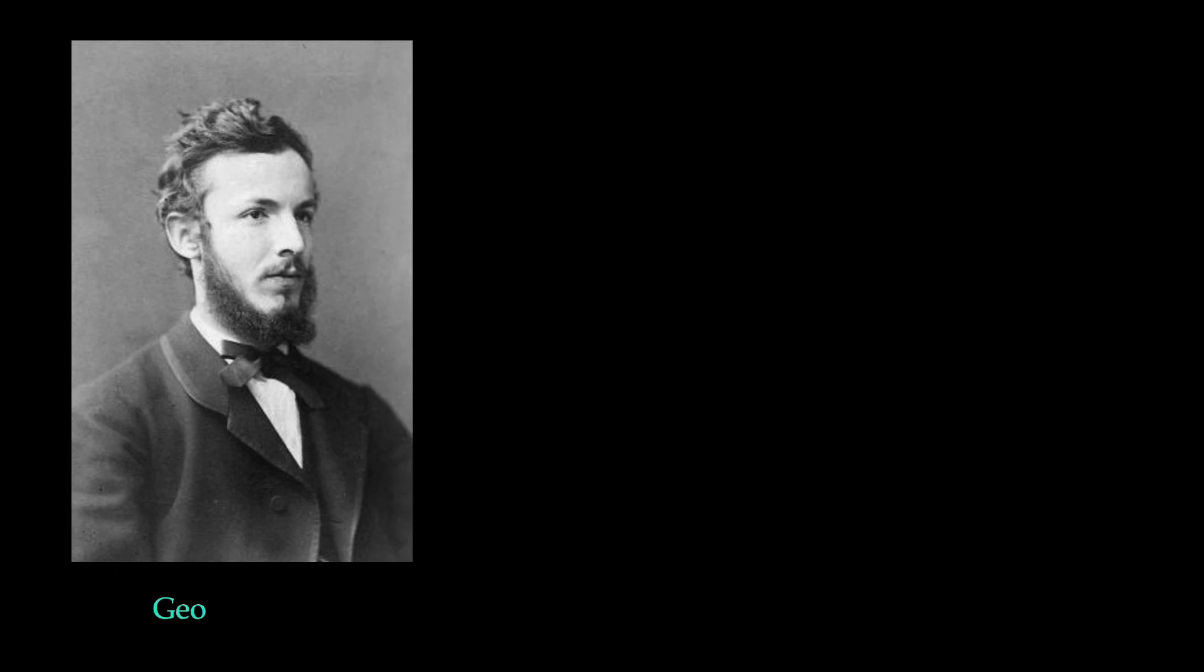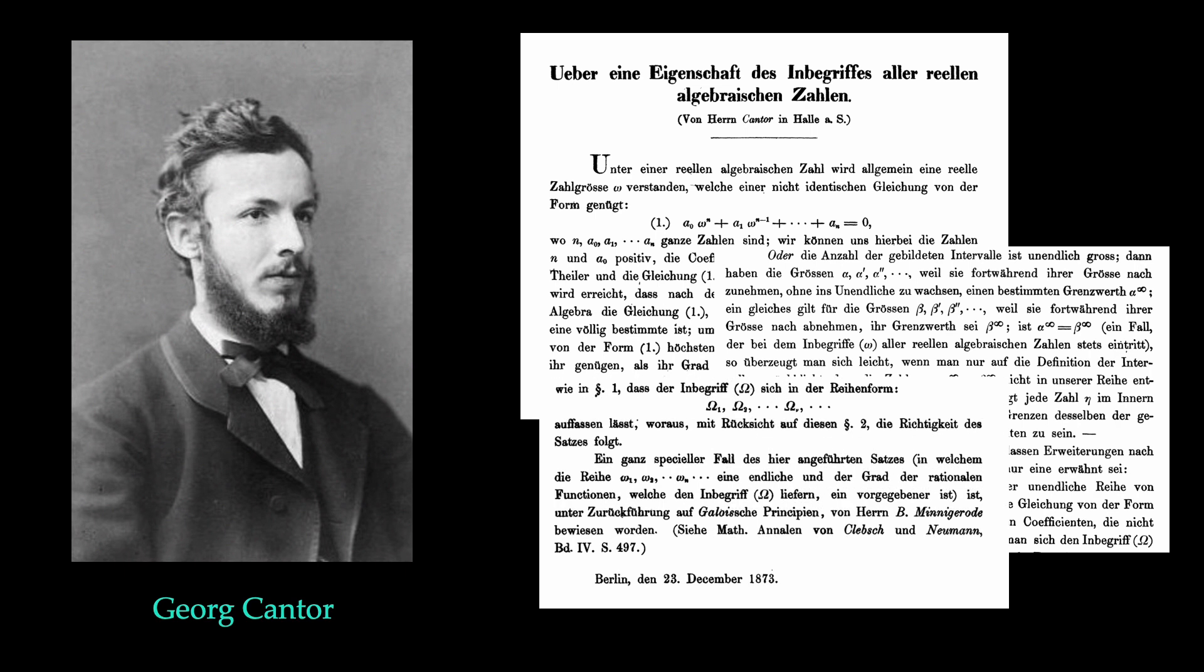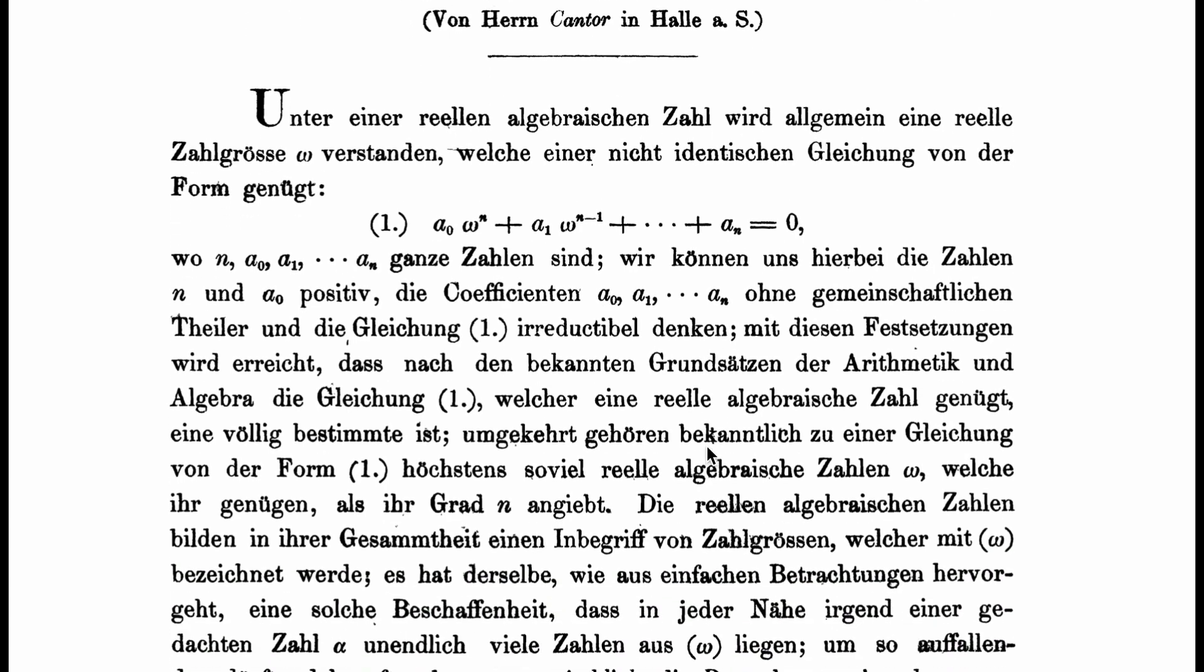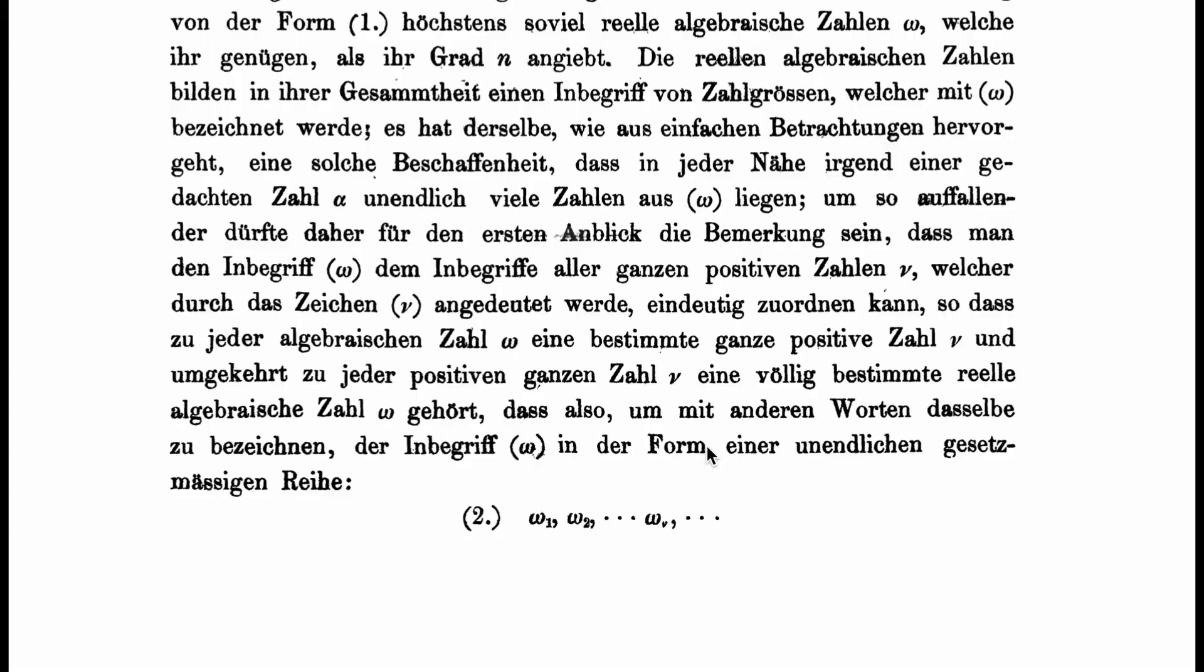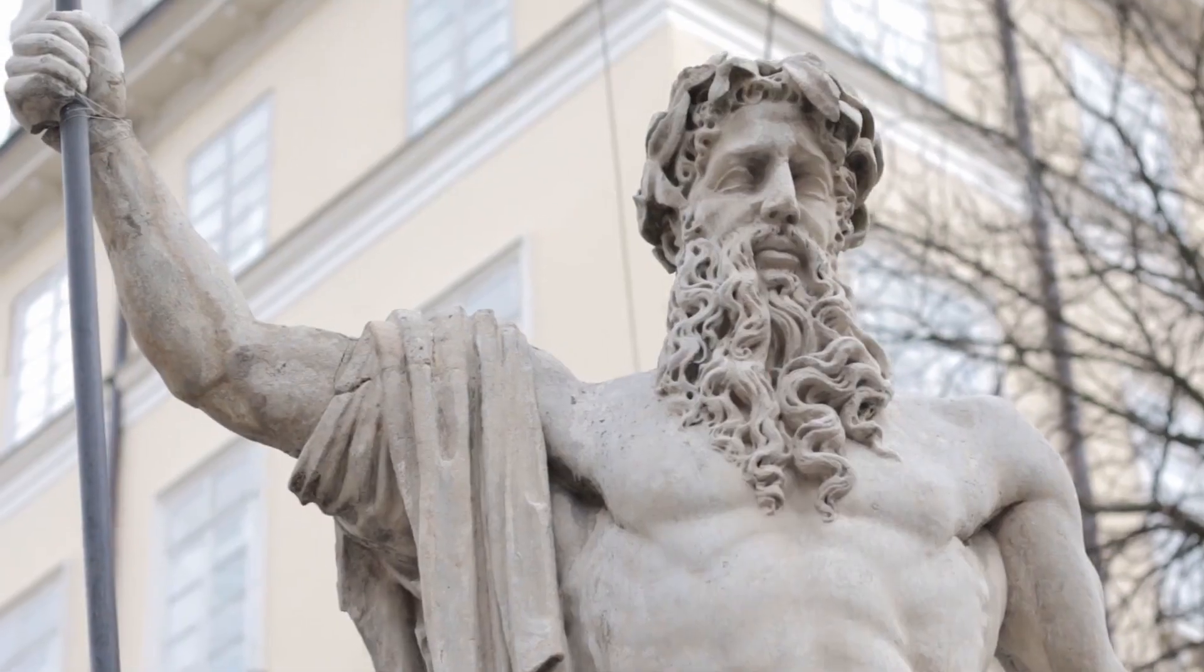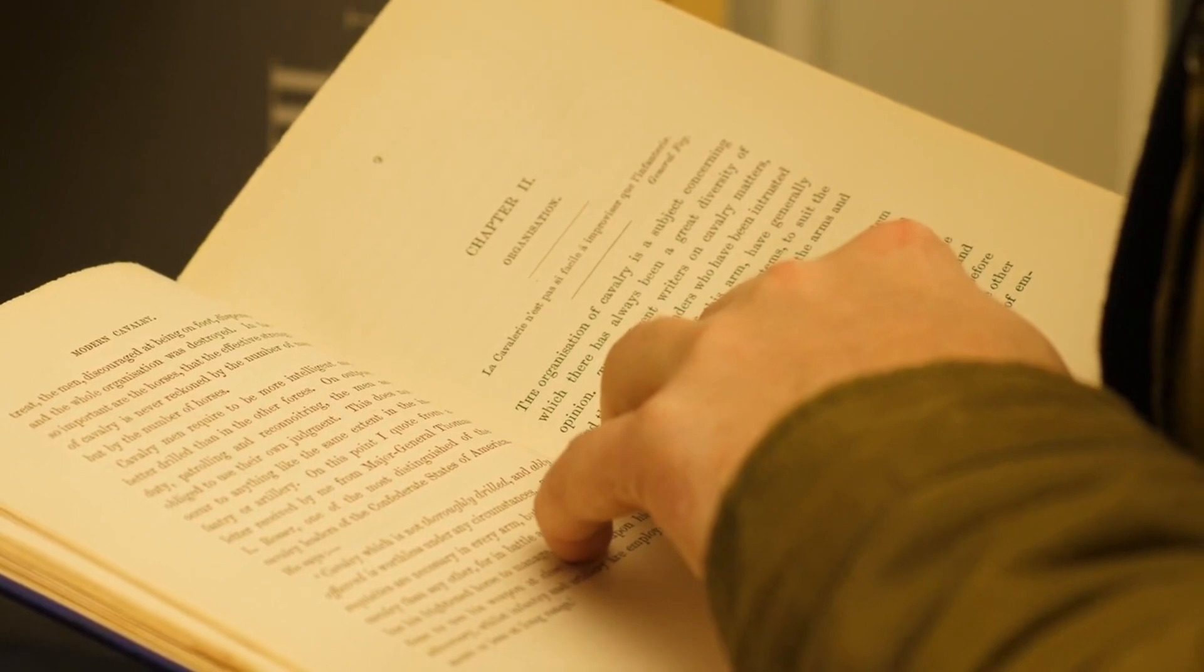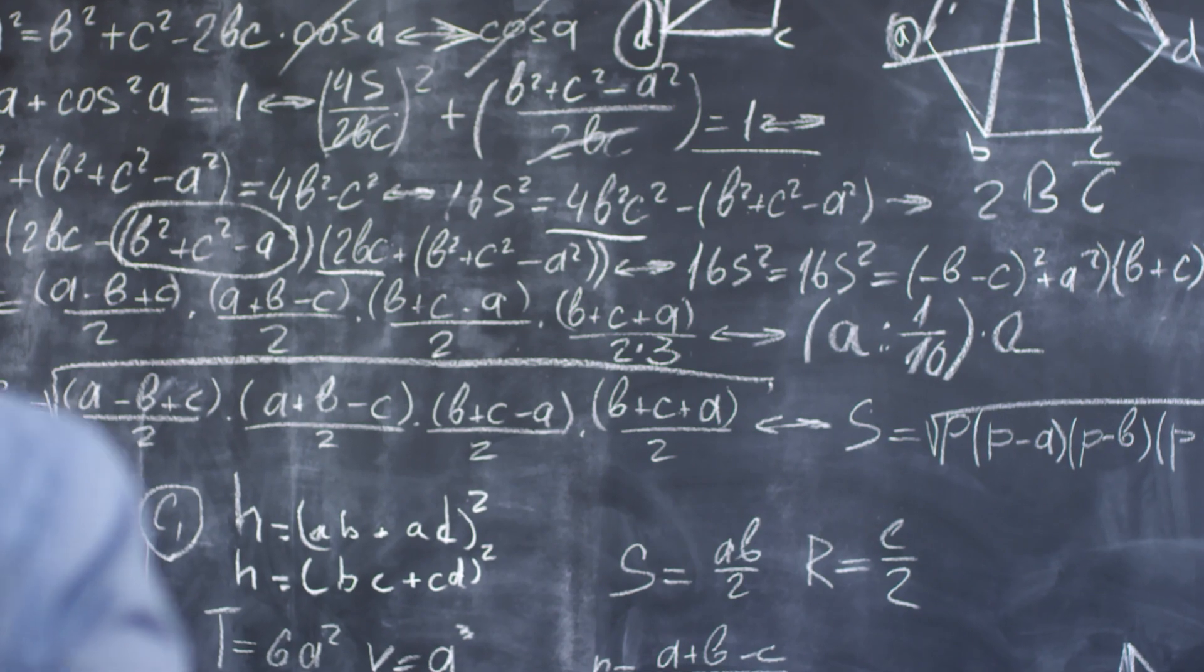In 1874, at only 29 years of age, German mathematician Georg Cantor published a paper that changed our understanding of infinity forever. For the first time in human history, he rigorously showed that there is more than one type of infinity, that there is something even bigger than infinity. Until Cantor, the concept of infinity had been more philosophical than mathematical. So how can you actually do it? How can you find something bigger than infinity?